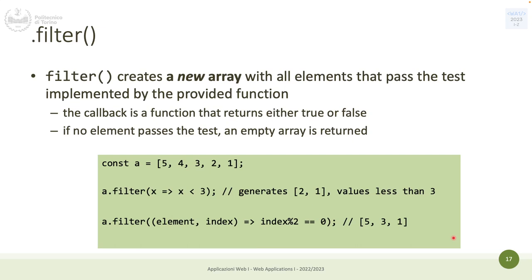'filter' creates a new array like map, but containing only the elements that pass a test. It's similar to 'every' and 'some' in checking a condition, and similar to map in giving you a new array. The callback in filter should return true or false. If no element passes the test, the returned array is empty.